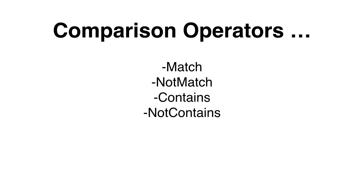Next up we have the contains and not contains operators. They are more specific than the match operators. If you specify a contains operator it's looking for an exact match, so the word needs to match exactly to what you are looking for. Next up we have the in and not in. The function is the same as the contains operator, just turned around, so it's an inverse since you need to specify what you're looking for first and then after that you specify where you're looking for it.